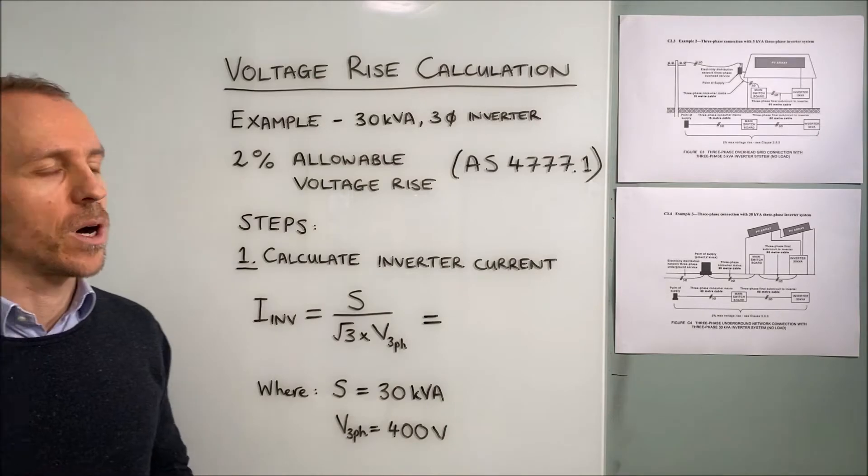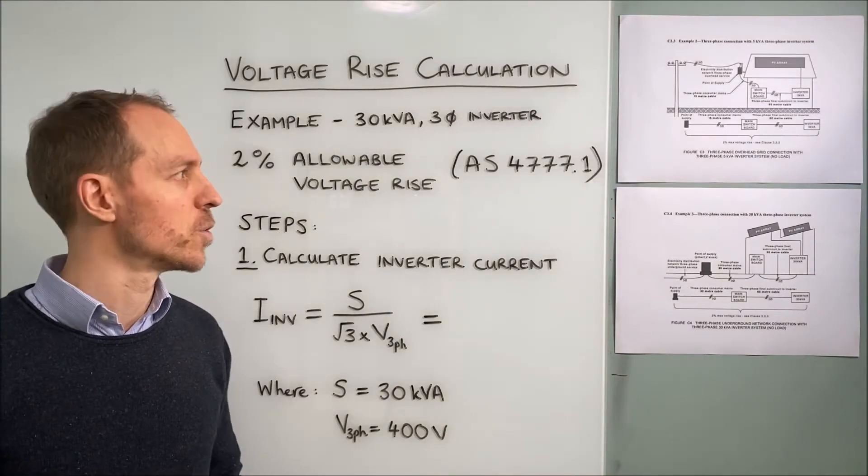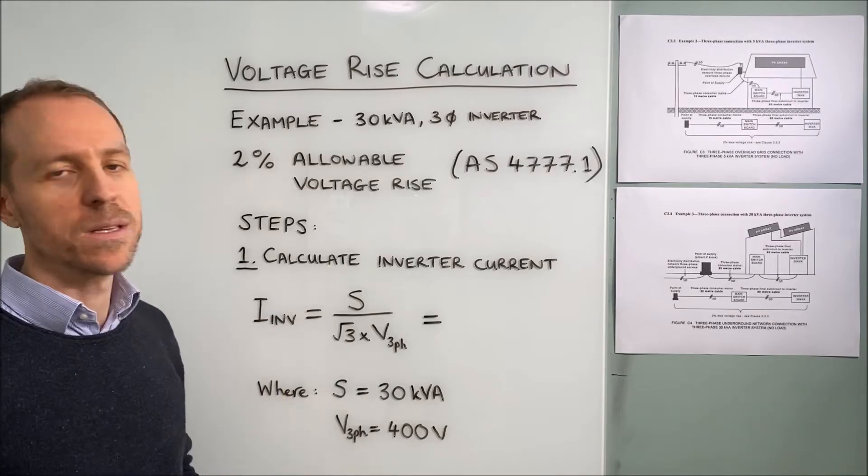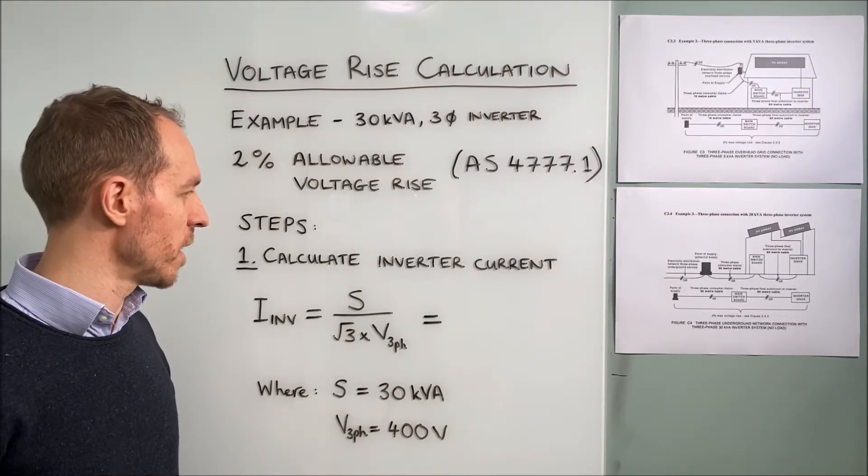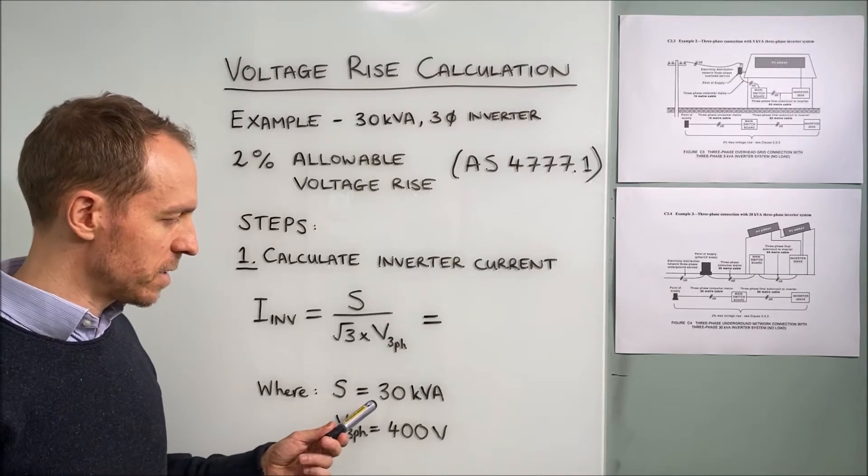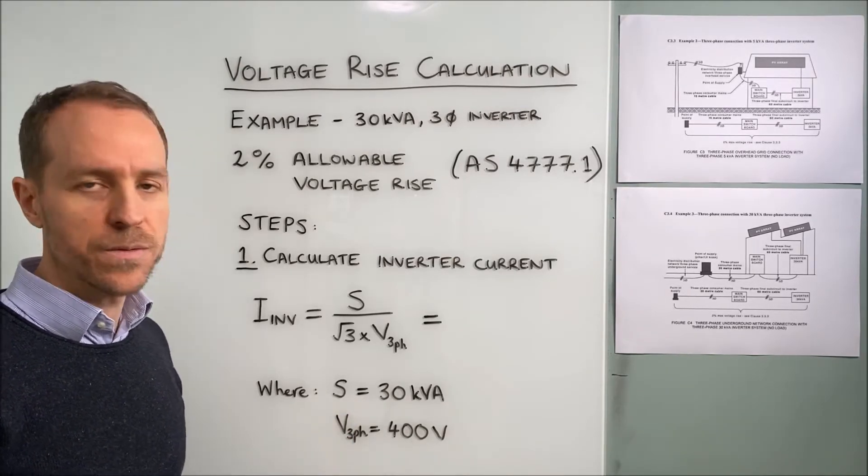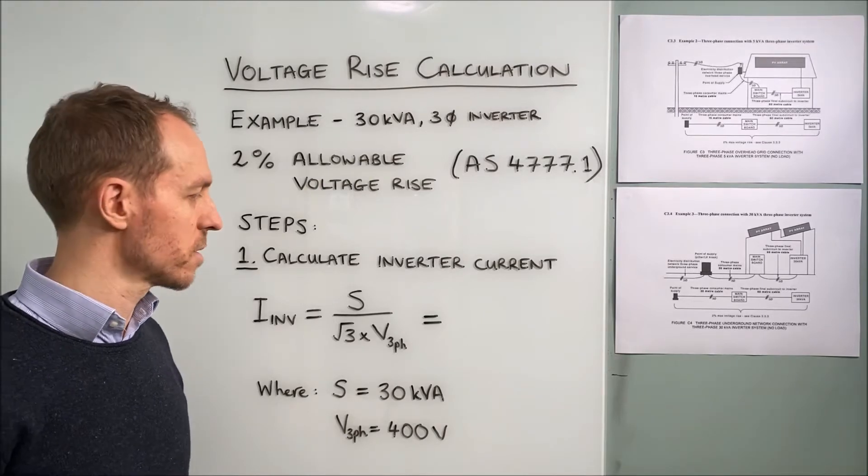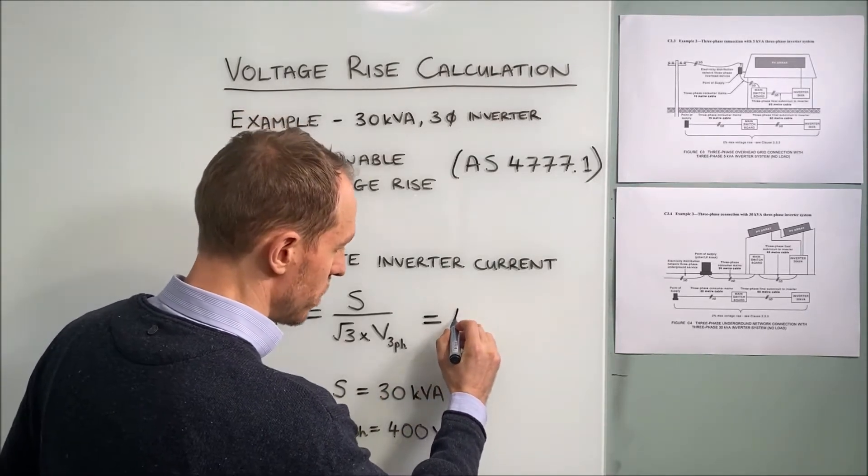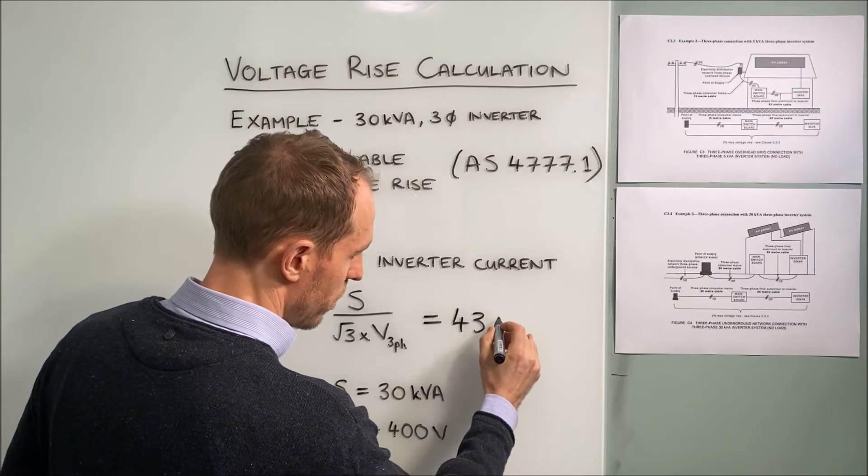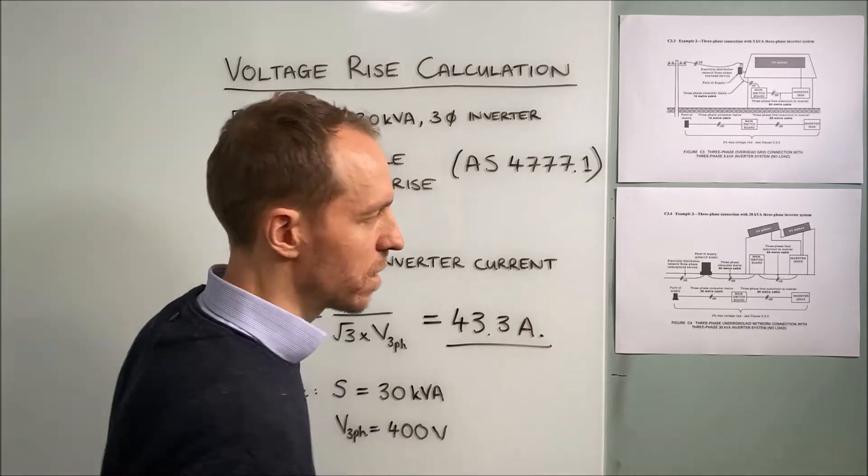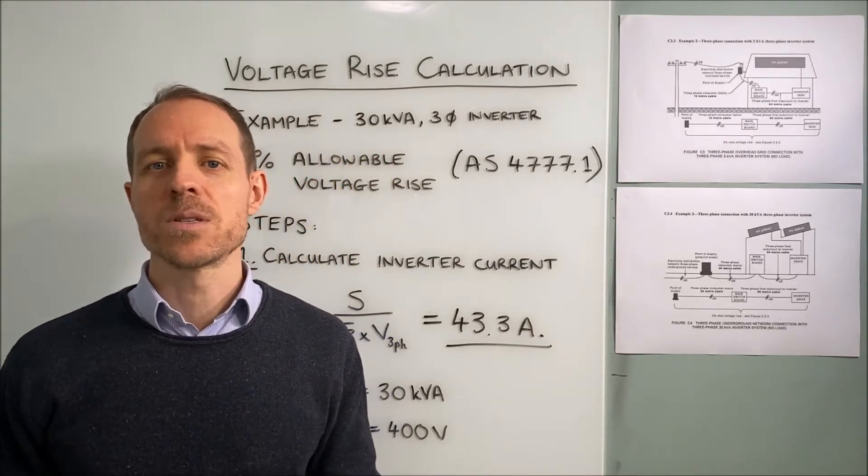The allowable voltage rise limit according to AS4777 is 2%. The first step to the calculation will be to calculate the inverter current. Based on its output of 30kVA and a three-phase voltage of 400 volts, the inverter output current is going to be 43.3 amps. We're going to use that to base our cable size calculations.